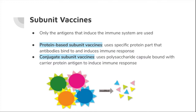Subunit vaccines contain only the antigens that induce the immune system and adjuvants to boost immune response. Protein-based subunit vaccines use specific protein parts that antibodies bind to and induce an immune response. Because proteins can denature, you can edit their structure to give it greater stability. Conjugate subunit vaccines use the polysaccharide capsule found on bacteria to induce the immune response.